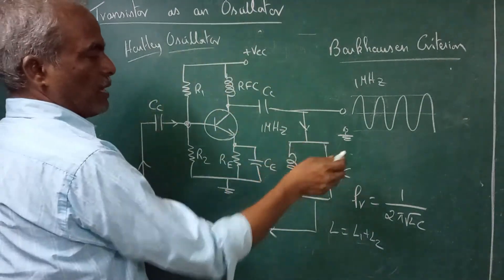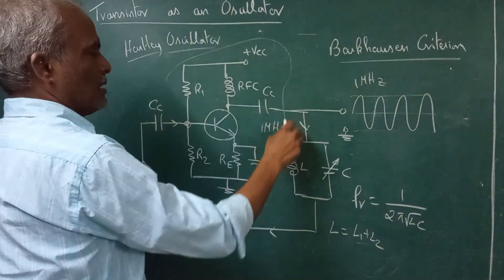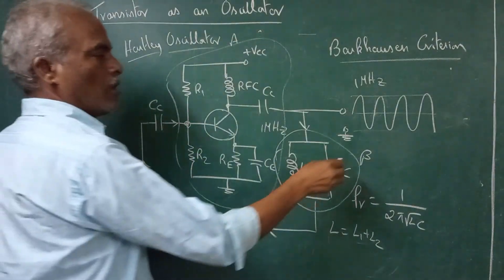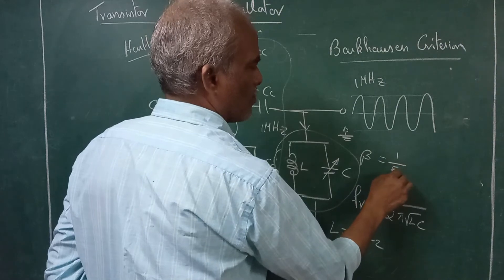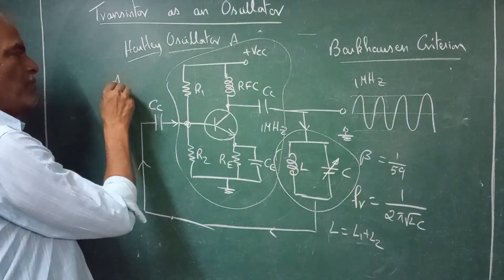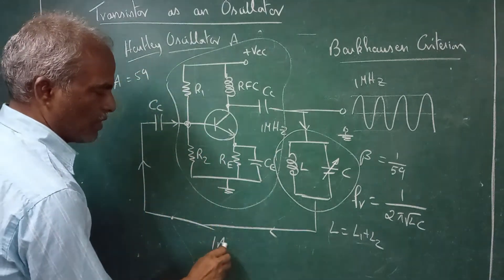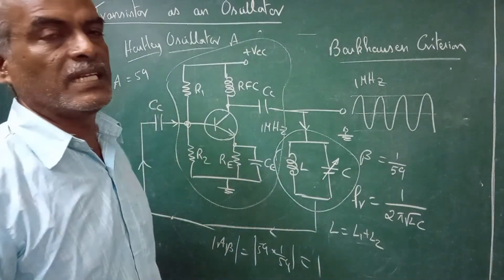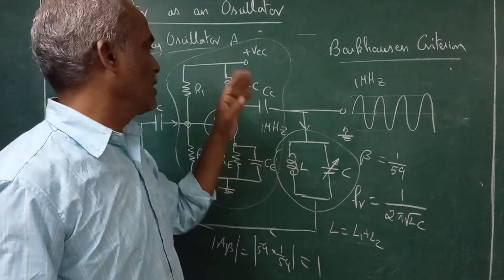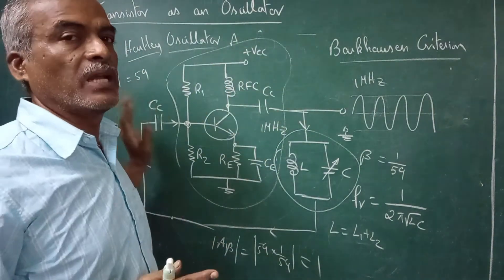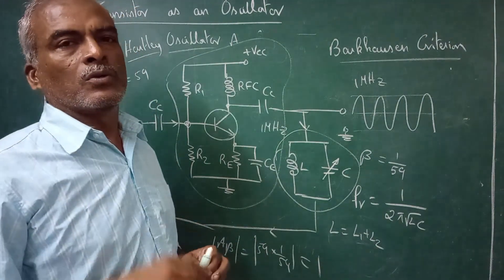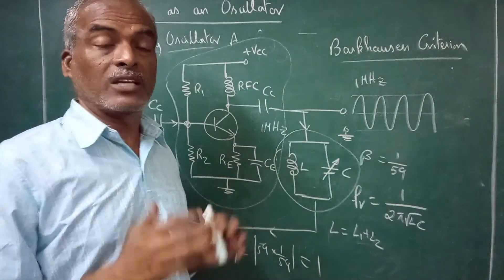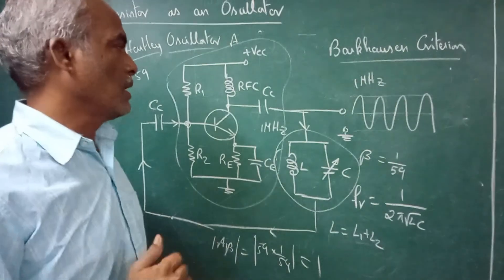The magnitude of Aβ should be equal to 1. For example, assume that this feedback — this beta network — has β = 1/59. So what should be the gain of the amplifier? Amplifier gain should be 59. Then the magnitude of Aβ = |59 × 1/59| = 1. Barkhausen criterion is satisfied. If β is 1/59 but you set the amplifier gain to some other value than 59, the circuit won't oscillate. To start the oscillation, gain should be slightly greater than 59. Magnitude of Aβ greater than 1 to start; equal to 1 to maintain.